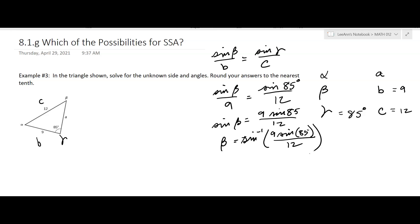So when I do this, inverse sine, 9 sine 85 divided by 12, and I get beta is approximately equal to 48.3 degrees. Now, does that seem reasonable according to our drawing? So right here, we just found beta, that's an acute angle less than 90 degrees, and 48.3 is less than 90 degrees.